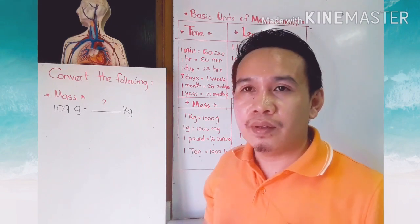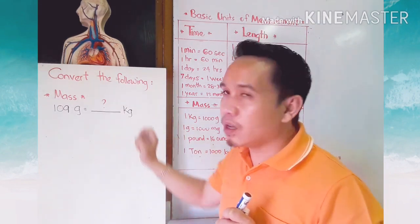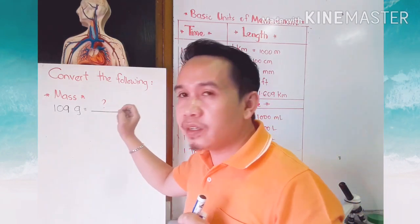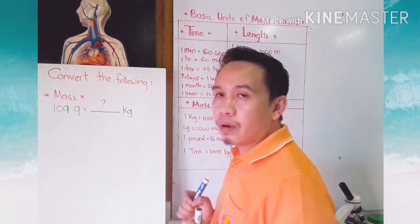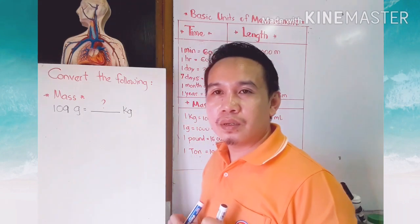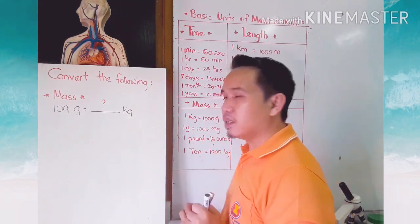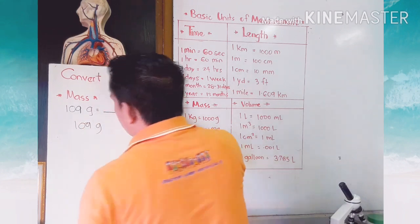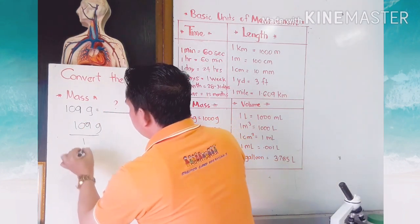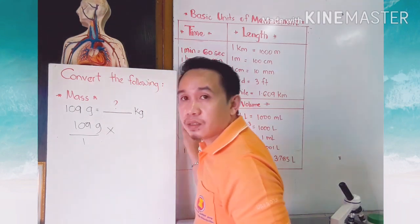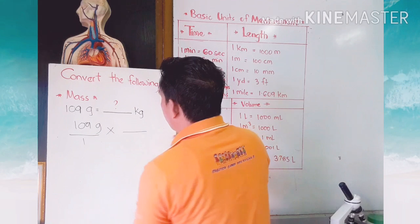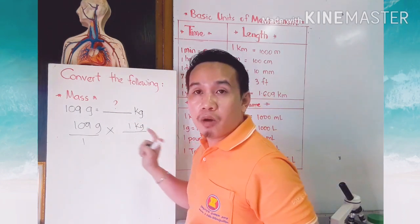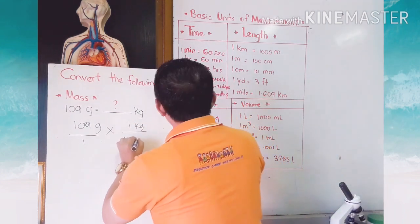Here is another example about measuring mass. We are asked to convert 109 grams to kilograms. Write the given number — 109 grams — and put 1 at the bottom, then use the multiply sign for the conversion factor. We know that 1 kilogram equals 1,000 grams.